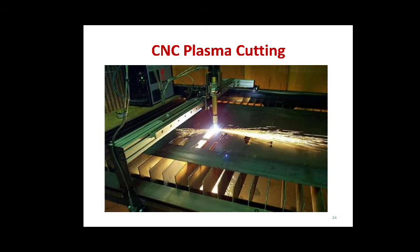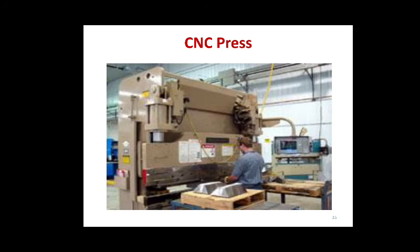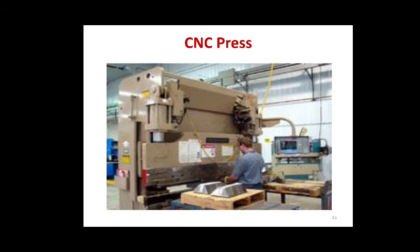Further we will see the CNC press machine. As mentioned, the role of the human is only to do the programming first, and once the program is entered, even unskilled labor can be used whose only role is to load and unload the job. The next machine is a rapid prototyping machine, which also uses CNC.